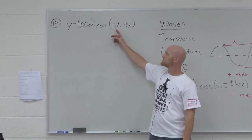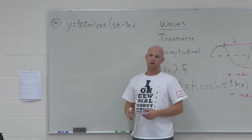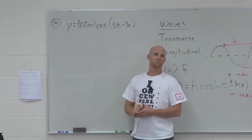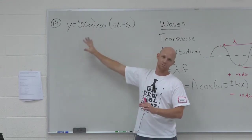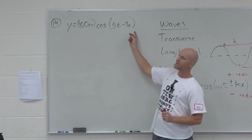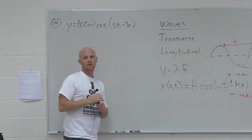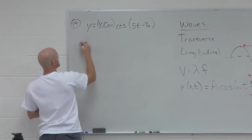Notice omega is still 5, amplitude is still 100. If I were to solve for the max acceleration or the max velocity, it wouldn't change. When I solve for the frequency, it wouldn't be any different than problem 11. Solve for the period, no different there. But the one thing I can get additionally at this time is what? The wavelength.